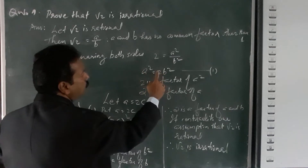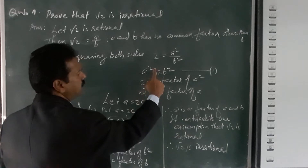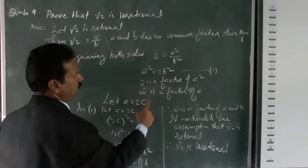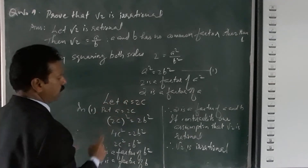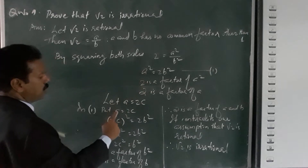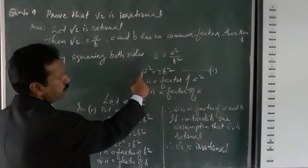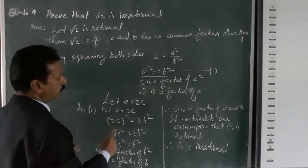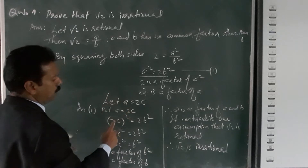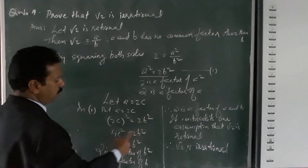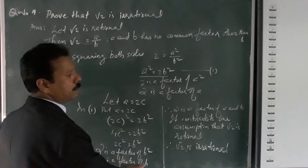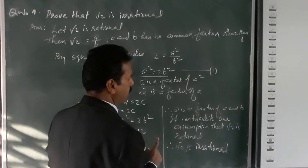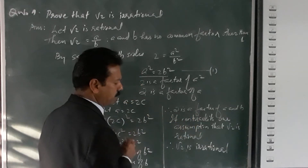Since 2 is a factor of a², 2 is also a factor of a. Let a = 2c. Substituting into a² = 2b²: (2c)² = 2b², so 4c² = 2b², giving b² = 2c². Therefore 2 is a factor of b² and hence 2 is a factor of b. But now 2 is a factor of both a and b, which contradicts our assumption that they are co-prime. Therefore √2 is irrational.